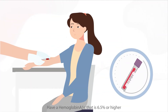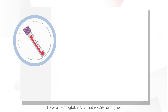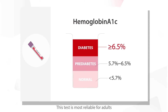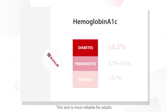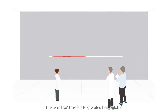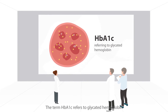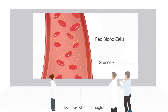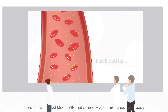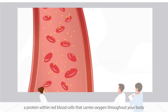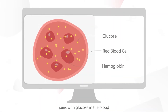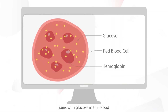Have a hemoglobin A1c that is 6.5% or higher. This test is most reliable for adults. The term HbA1c refers to glycated hemoglobin. It develops when hemoglobin, a protein within red blood cells that carries oxygen throughout your body, joins with glucose in the blood.